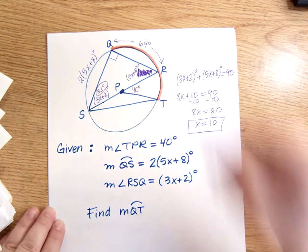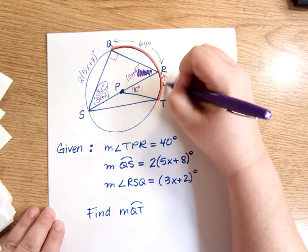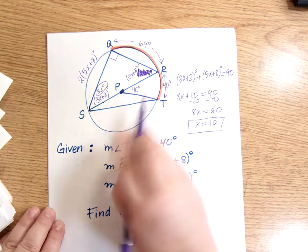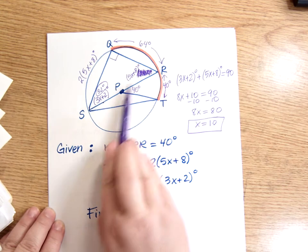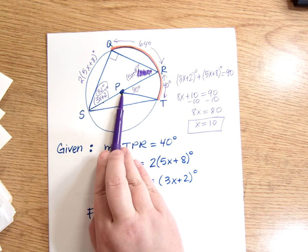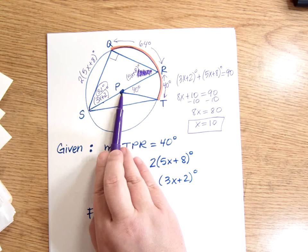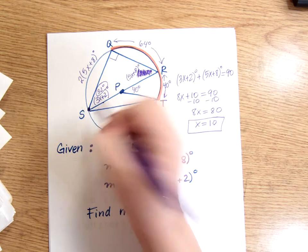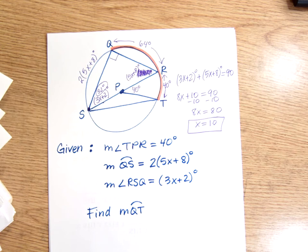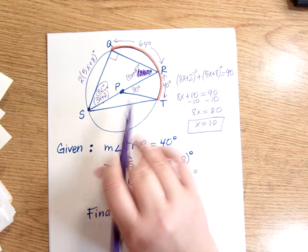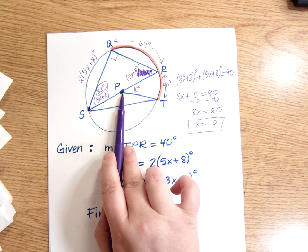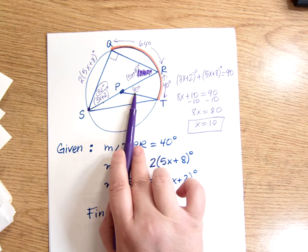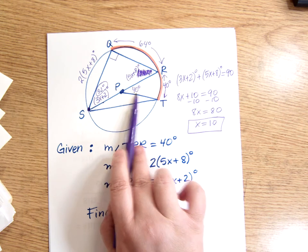Well, we already know that this arc is 40 because this is a central angle. Angle R, P, T is a central angle. Make sure that you pay attention to where your vertex is. We get so used to doing vertices or angles with a vertex that are on the circle that we tend to forget that when it's at the center of the circle, the measure of the angle, this is a central angle, so the measure of the angle is the same as the measure of the arc.